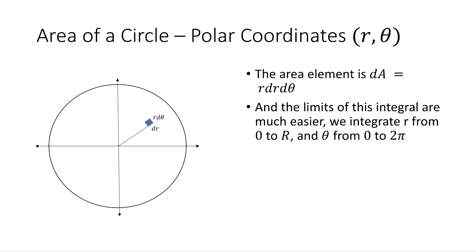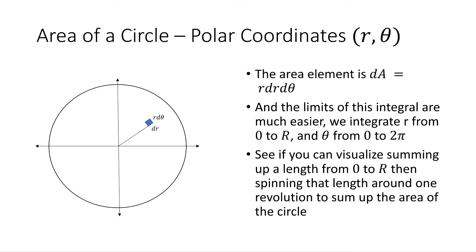So the limits for this are much easier than the limits before. r is not dependent on theta, and theta is not dependent on r. As you can imagine, summing up the length, so a little rectangle with length r. So you're summing up r from 0 to the radius of the circle, and it has a thickness of r d theta. And you can imagine taking that and spinning it around the circle for one revolution, and you sum up the entire area of that circle.